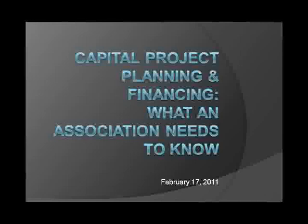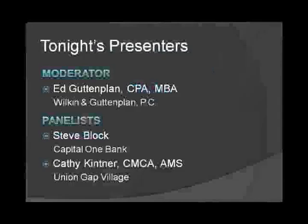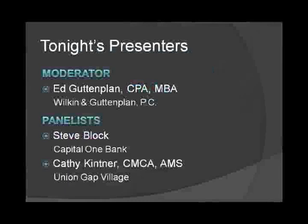Our esteemed panel tonight, in the order you'll hear them speak. First is the grandfather of community association accounting, Ed Wilkin, who co-founded Wilkin and Guttenplan in 1983. Since founding the firm, he has worked with over a thousand community associations. With 30 years of experience, he has extensive knowledge in auditing, accounting, litigation support, developer transition, and forensic and fraud accounting. He's a past president and board member of New Jersey CAI, and a speaker and author for CAI nationally and locally.